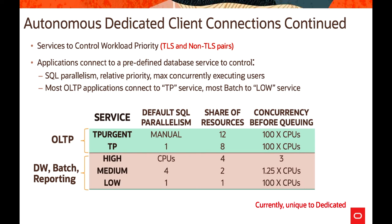TP Urgent is a high-priority connection service for time-critical transaction processing operations and supports manual parallelism. TP is for typical transaction processing and does not run with parallelism. High is for high-priority reporting and batch operations — all operations run in parallel and are subject to queuing. Medium is for reporting and batch with parallelism and queuing. Low is the lowest priority for reporting and batch, and does not run with parallelism. Services disconnected after five minutes of idle time free up resources for other active users.